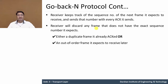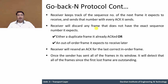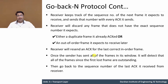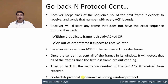The receiver expects to receive frames in order and will resend the acknowledgement for the last correct in-order frame. Once the sender has sent all frames within its window size and detects that the first lost frame is outstanding, it goes back to the sequence number of the last acknowledgement it received from the receiver. This protocol is also known as a sliding window protocol.